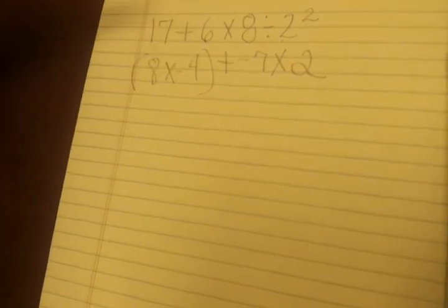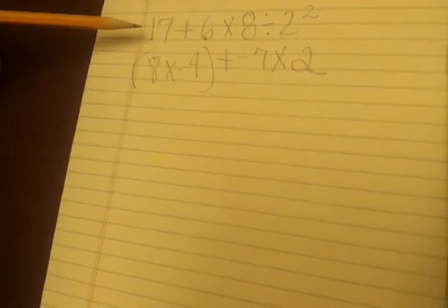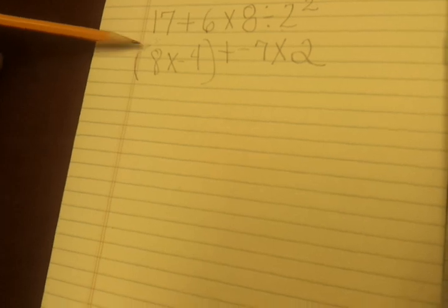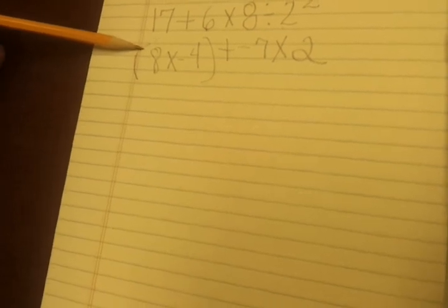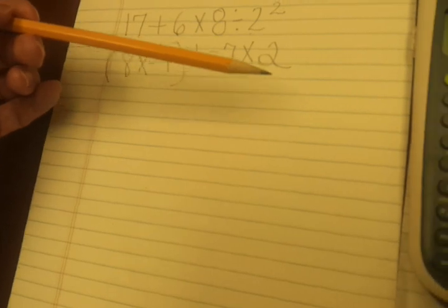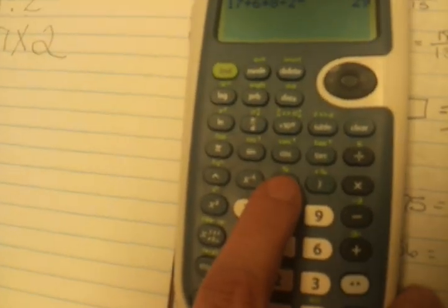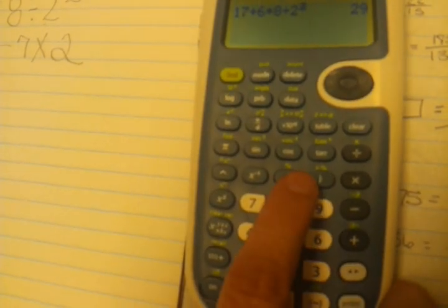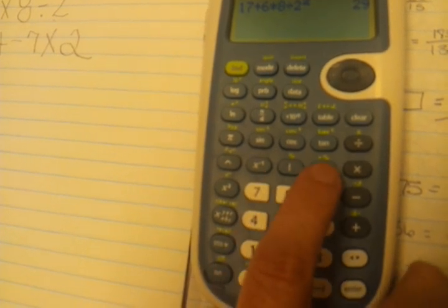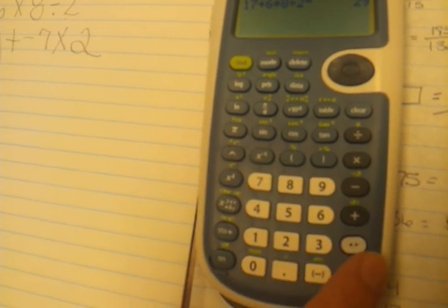However, when I'm entering this on the calculator, I'm just going to enter the parentheses as I see them here on the paper. So moving over to the calculator, there are parentheses buttons right here. Above the 8 and the 9 you have your open parentheses and then above the 9 you have your closed parentheses.